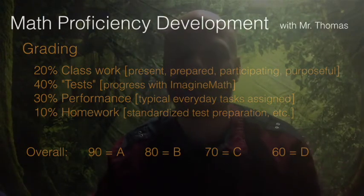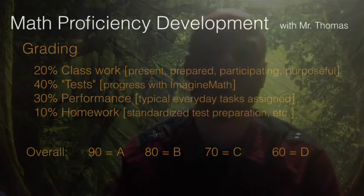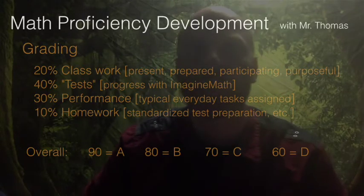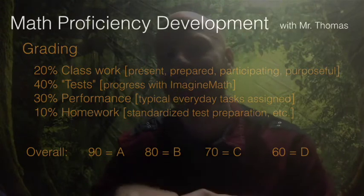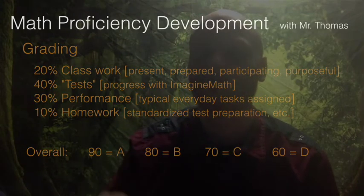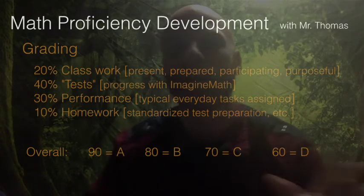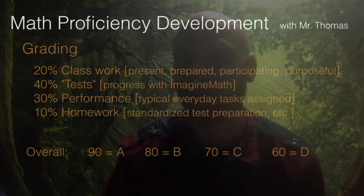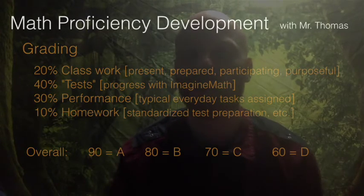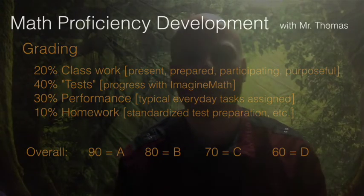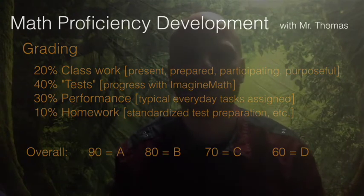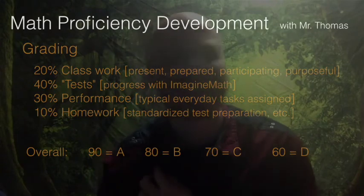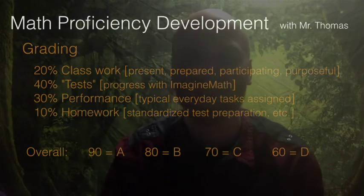The thing I'm going to put in the test category is a computer-based program requirement called Imagine Math. They have to complete a certain number of lessons in that program each week. The program tries to individualize things and hit them at their level, so different kids are working on different lessons at the same time. That's the 40% category. I do ask them when they're engaged with that program to turn in notes to me — they need to be taking notes while working with it. The second biggest category, performance, is where typical everyday assignments go. Anything I assign on a typical day, that's where most of my points will go. Homework will be stuff I assign less often — like test prep — and anything that doesn't fit the categories above.